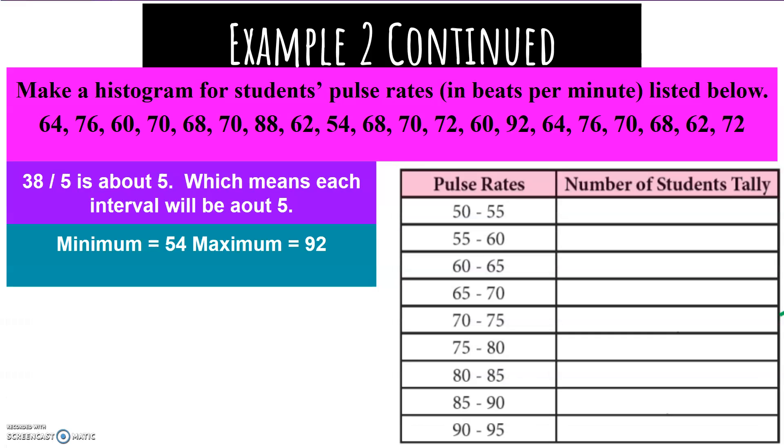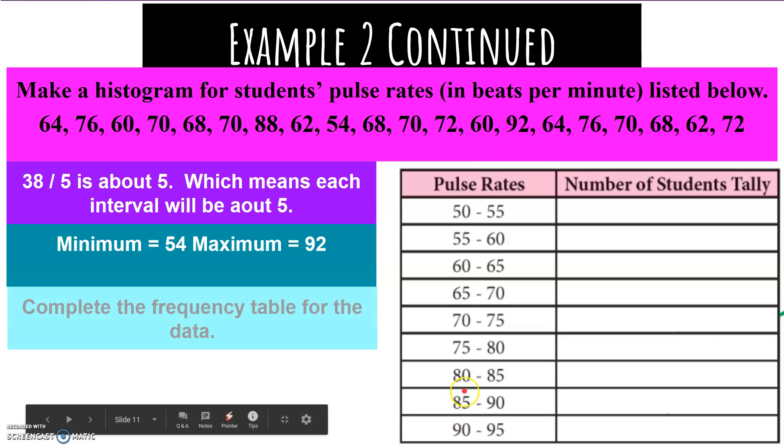We're going to start at 50 and go to 55. Yes, our lowest is 54, but if we're going to be using intervals of 5, we don't want to start at 54. We want to start with numbers that make sense. 50 to 55 includes 54. Same here down at 90 to 95, it includes 92. We're not going to stop at 92. We're going to stop at our interval of 5. So we're going to complete the table for the data.